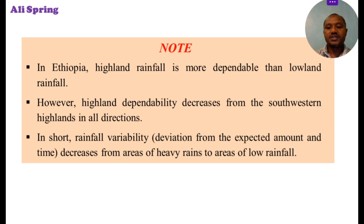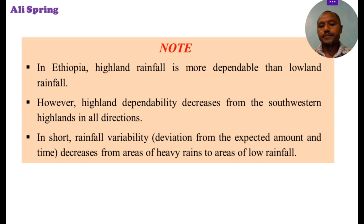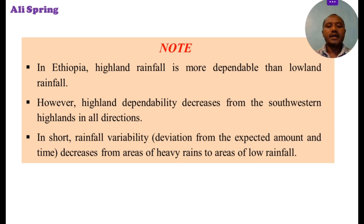Rainfall dependability decreases from the south-eastern highlands in all directions. Rainfall variability, or deviation from the expected amount and time, decreases from areas of high rainfall to areas of low rainfall.